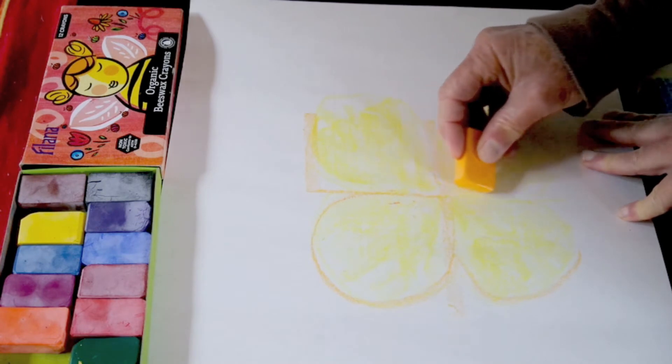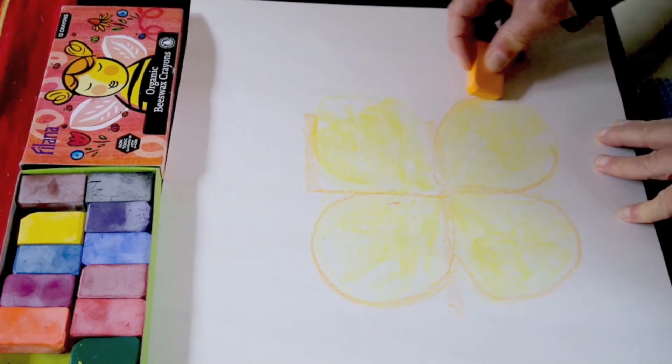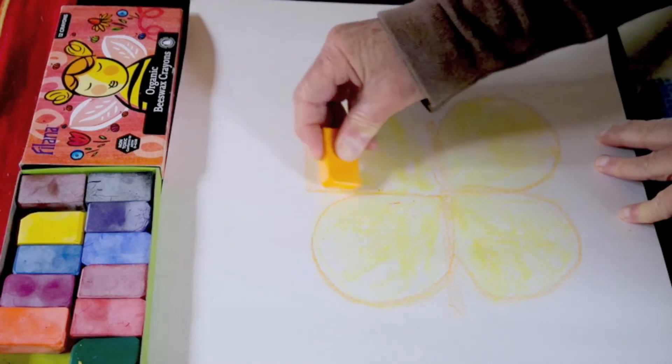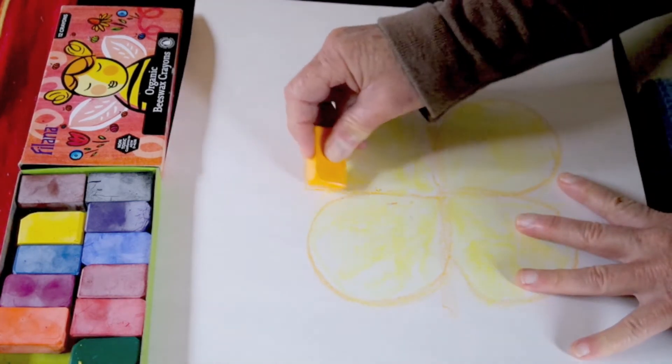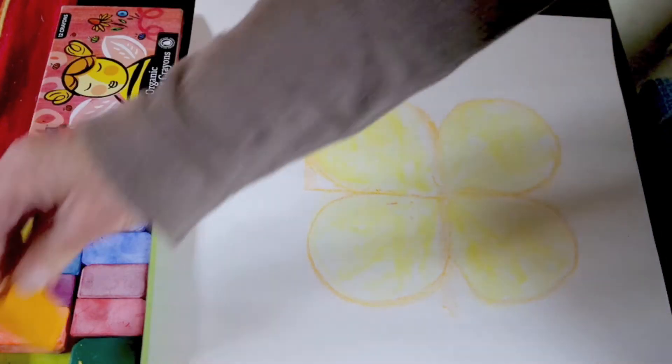The sepals are the green parts of the plant that hold the bud in before the flower opens. That's a nice accent around the curve of the petal. We'll go back over those petals later and color them in nice and dark.